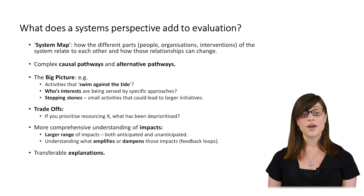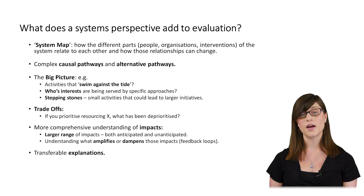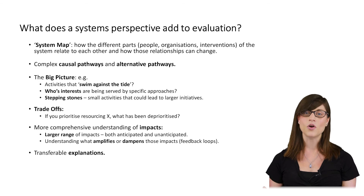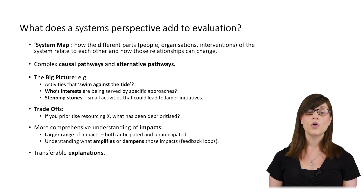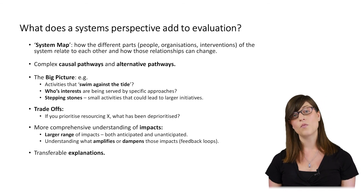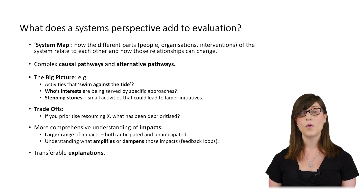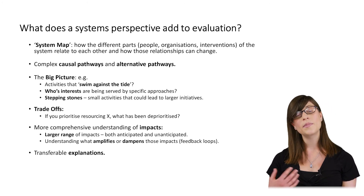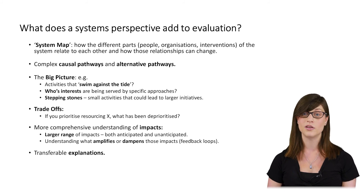A systems approach also allows us to look at trade-offs. If we prioritize resourcing one thing, what becomes deprioritized? Sometimes this is very obvious, but often it happens in more subtle ways and only becomes obvious when we step back and take a more holistic picture. It also gives us a more comprehensive understanding of impacts — both anticipated impacts and those that are potentially unanticipated when we design interventions — and gives us an understanding of what amplifies and dampens those impacts. Finally, a systems perspective might allow us to look at what explanations are transferable from one area to another, by getting a better understanding of how the context and broader system context interacts with the intervention.